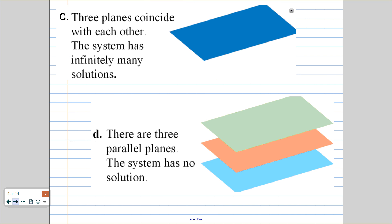The third case is if the three planes are on top of each other — also infinitely many solutions, but this time anything on the plane, not just a single line, is considered a solution. The fourth possibility is if we have three parallel planes, like shelves. They are not intersecting, so we say that there is no solution.